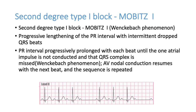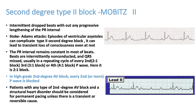If QRS complexes drop very frequently in second degree heart block, the patient will go into bradycardia. In the ECG shown, this is Mobitz type 2: you see P wave, QRS complex, then another P wave with no QRS complex, then normal, then again P wave with no QRS complex. This is high-grade second degree heart block, and the patient can have severe bradycardia.